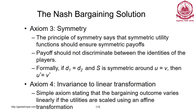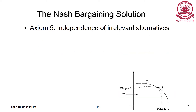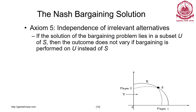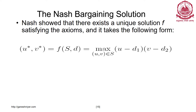Invariance to linear transformation states that the bargaining outcome varies linearly if the utilities are scaled using an affine transformation — so instead of $100 it becomes $200, the rich man/poor man problem is still very similar. Independence of irrelevant alternatives means that if the solution of the bargaining problem lies in a subset U of S, the outcome does not vary if bargaining is performed on U instead of S. Given all these axioms, the bargaining solution is a closed-form solution: (U*, V*) = max of (U − D1) × (V − D2). Find U and V such that (U − D1)(V − D2) is maximum — that is the bargaining solution, known as the Nash product.